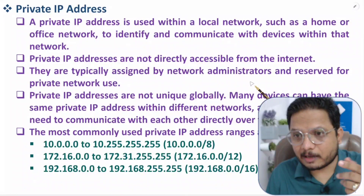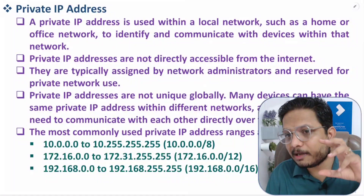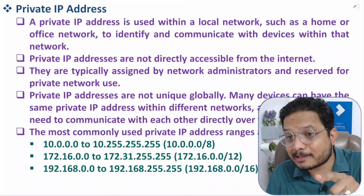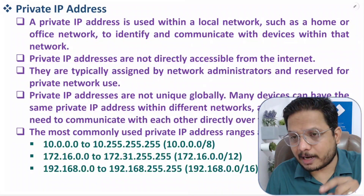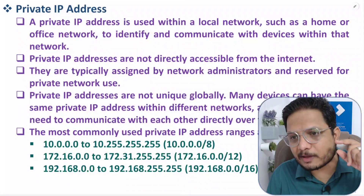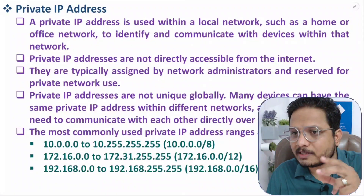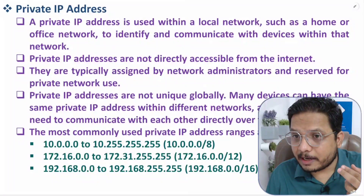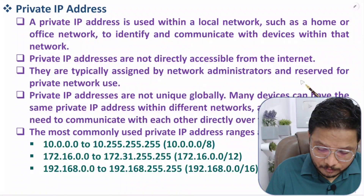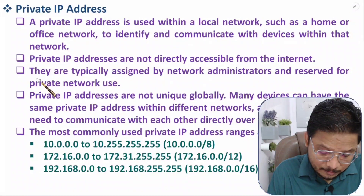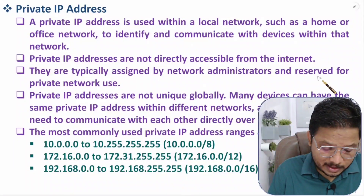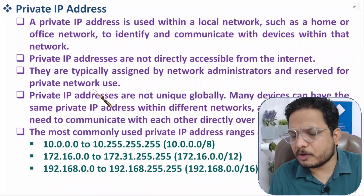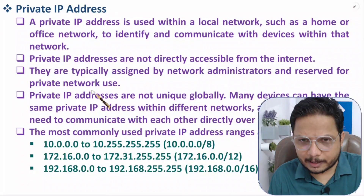Private IP addresses are typically assigned by the network administrator, and dynamic assignment happens via the DHCP protocol. In my previous video I explained how DHCP protocol assigns IPs. Within a local area network, the DHCP protocol can assign private IPs dynamically — the router can assign private IPs to all devices in the network.